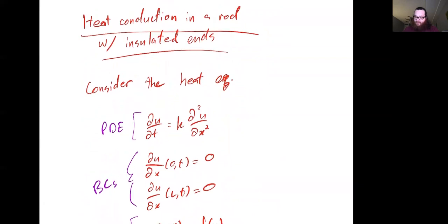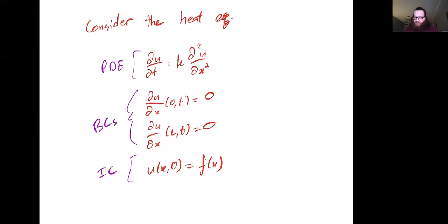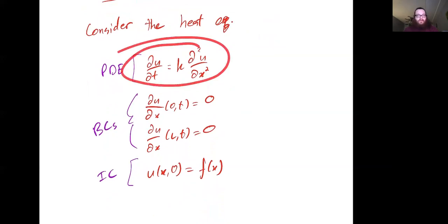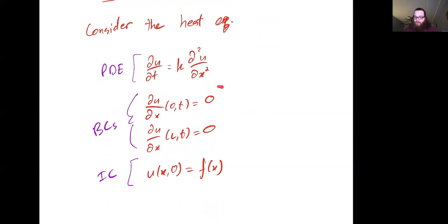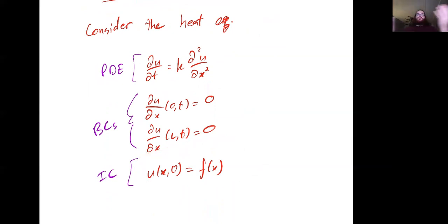For the first new boundary value problem, the physical motivation is that we're looking at heat conduction in a rod with insulated ends. How do we express that mathematically? We have the heat equation describing heat flow, the insulated boundaries coming in as a boundary condition — the spatial derivative of temperature is zero at the ends — and finally an initial condition that gives the initial temperature profile.